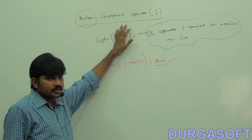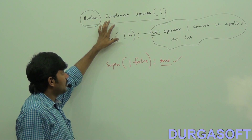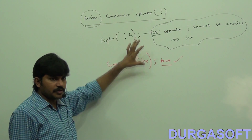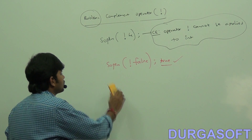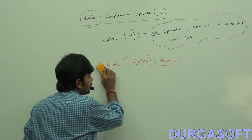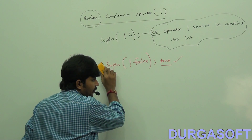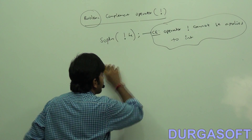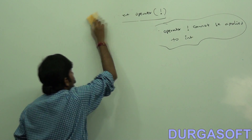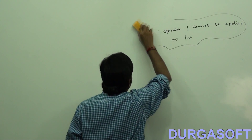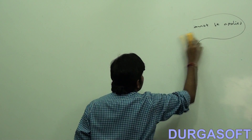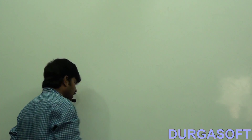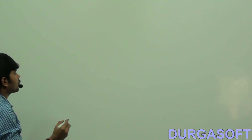So, what is the difference between the boolean complement and the bitwise complement operators? Let me summarize these bitwise operators.